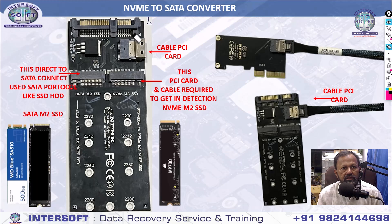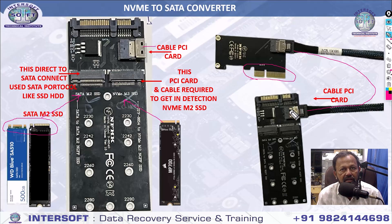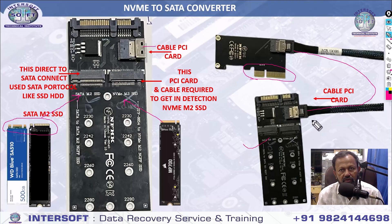The NVMe to SATA converter — this is what we are using normally. If you have this type of notch, this type will run here and this will run here, but it will not run with SATA. It requires this special cable, and you have to connect this PCI Express card on the system. This will not auto-detect — you have to power off and power on, then the NVMe will detect. These are also available in the market. We already sell this type, and you can buy from us.